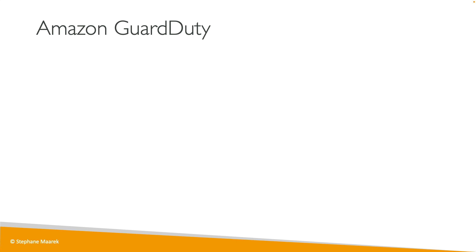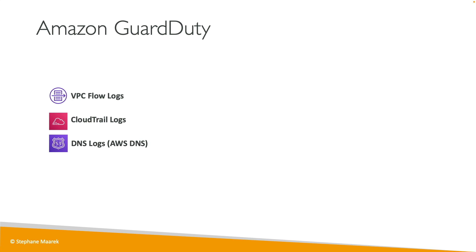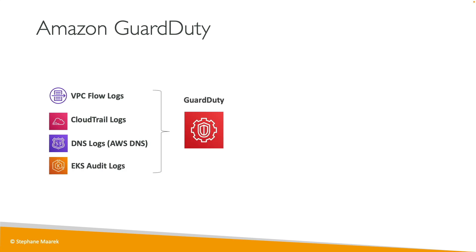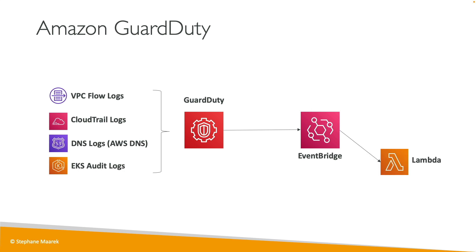To summarize, we have input data such as VPC flow logs, CloudTrail logs, DNS logs, and the EKS audit logs that will go into GuardDuty and will generate findings automatically. These findings can trigger automatically EventBridge events, which thanks to rules can end up in Lambda and SNS. That's it for this lecture. I hope you liked it and I will see you in the next lecture.